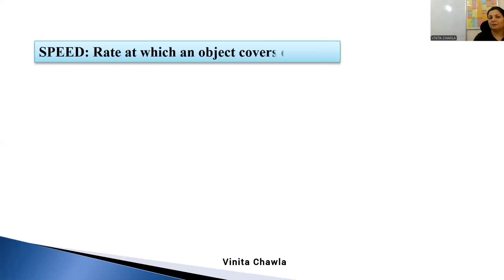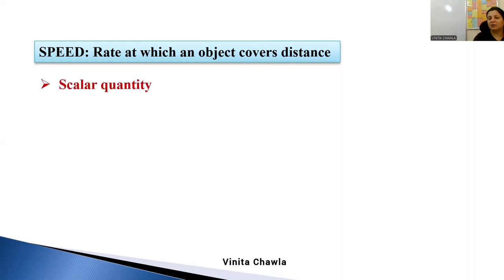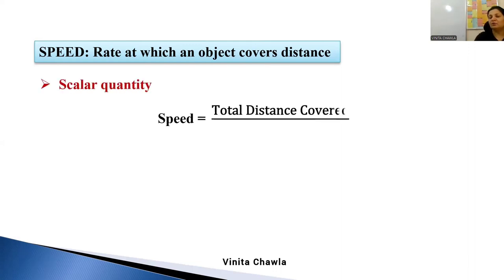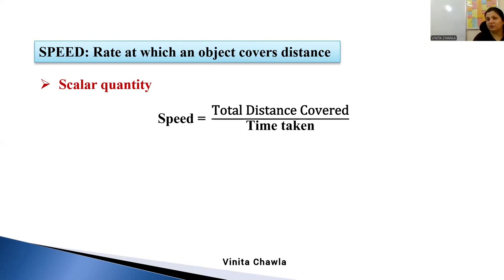Speed is the rate at which an object covers a distance. Speed is a scalar quantity, and it is the total distance covered upon total time taken. This is how we find speed. It is a scalar quantity, meaning we have only magnitude — we are not considering direction.